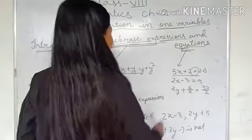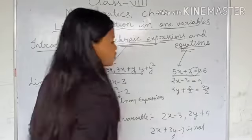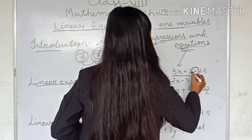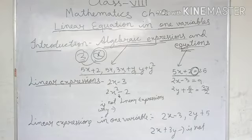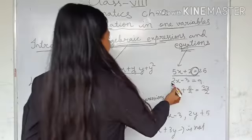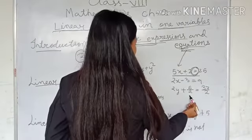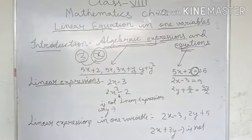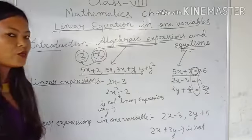Now, equation. What is the example of an equation? 5x plus 2 equal to 25. Whenever there is an equality — an equal sign — that means it is an equation. Another example: 2x minus 3 equal to 9, and 2y plus 5 upon 2 is equal to 37 upon 2. So these are called algebraic equations. Wherever there is an equal sign, that will be an equation.